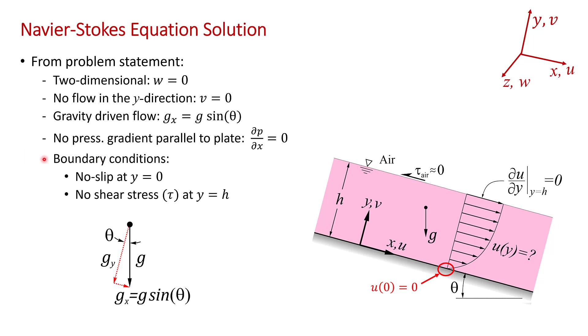You're given essentially two boundary conditions on velocity. One is that at the plate surface, you have the no-slip condition. So at y = 0, u = 0. In addition, you're told that the air above the plate imparts a negligible viscous shear to this liquid-vapor interface. So τ = 0 and τ = μ du/dy. That's where we get the boundary condition that ∂u/∂y at y = h equals zero. That's a zero shear stress boundary condition at the upper boundary, and we'll need those two boundary conditions for our solution.